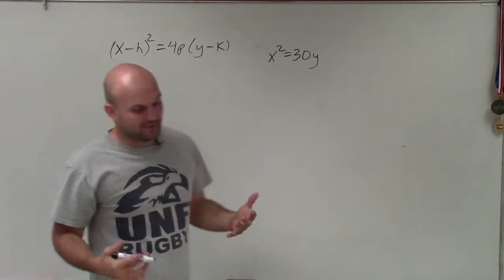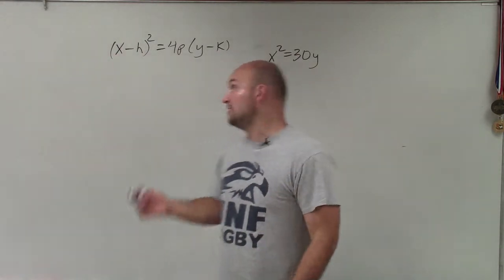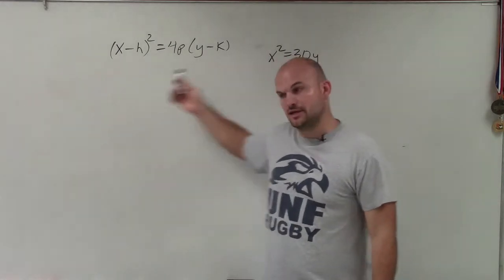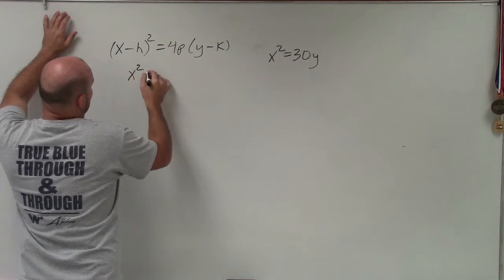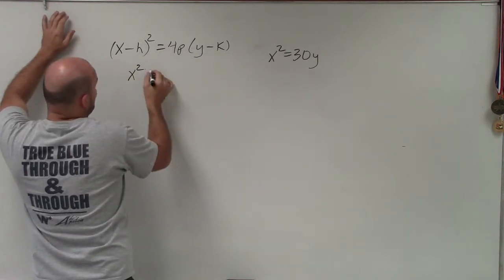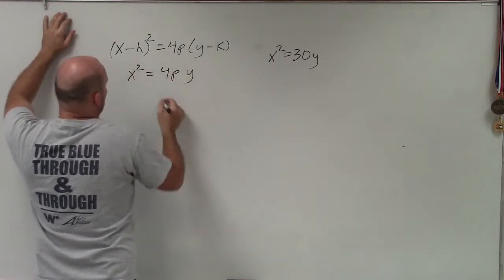When you already know that the vertex is at (0,0), you don't really have to always write out this extensive problem. But basically, what I can write is x² = 4p·y, since there's no h and k.